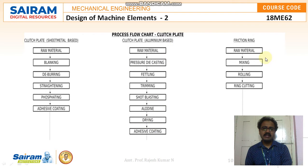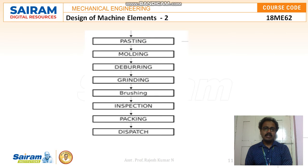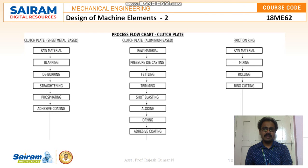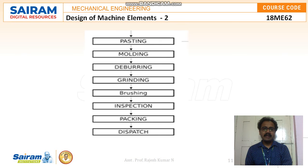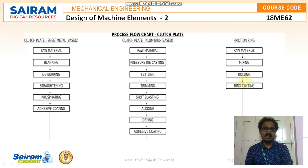The water streaming, aludine process, and shot blasting will be discussed in detail when solving problems. The third process is for friction ring materials — the raw material goes through mixing and rolling, and finally ring cutting. Once any of these three base methods is complete, we proceed with pasting the clutch friction material onto the base material, followed by molding, deburring, grinding, brushing, inspection, packing, and dispatch. This is the process followed in industry for making the clutch plate.